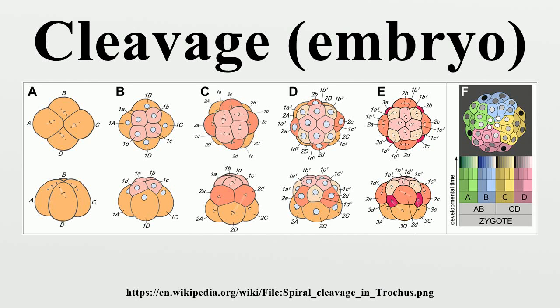In embryology, cleavage is the division of cells in the early embryo. The zygotes of many species undergo rapid cell cycles with no significant growth, producing a cluster of cells the same size as the original zygote. The different cells derived from cleavage are called blastomeres and form a compact mass called the morula.